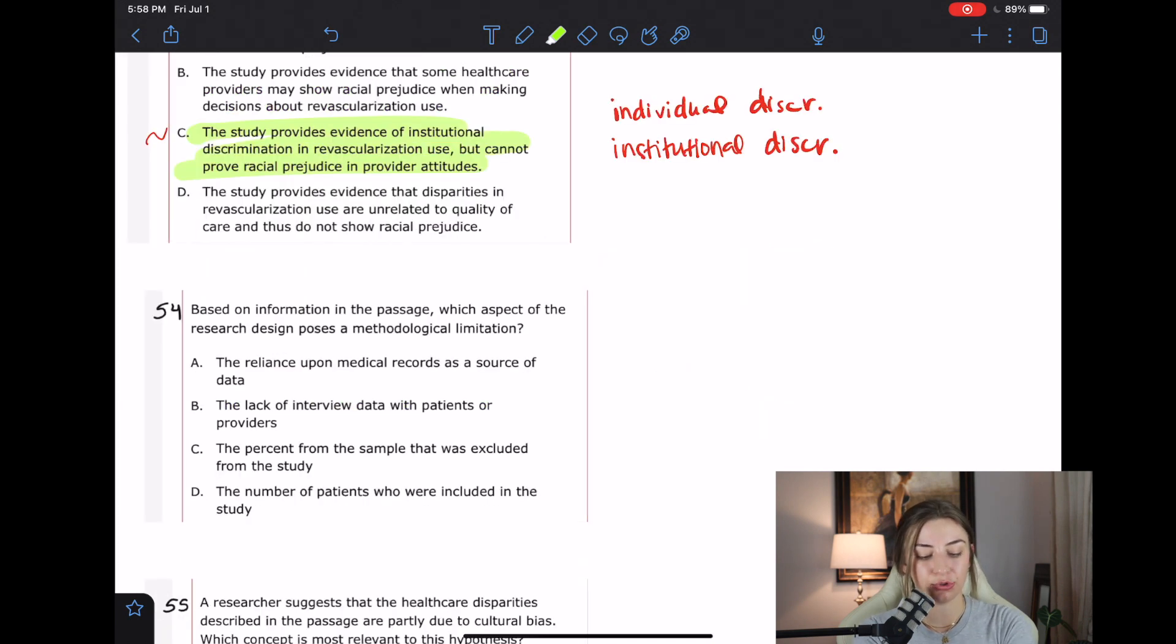Based on the information in the passage, which aspect of the research design poses a methodological limitation? So knowing some common limitations is an important aspect of being able to answer these research questions on the MCAT correctly. So what I'm going to do instead of going back in the passage and trying to find the limitations, because there was a ton of research methods up in there, I'm going to read the answer choices and then see if that was something that I feel like one is a limitation and two was actually something that happened in the methodological part of the passage. A, the reliance upon medical records as a source of data. Medical records are a great source of data.